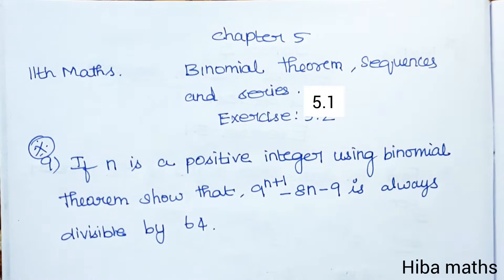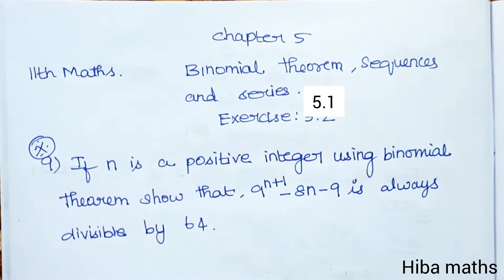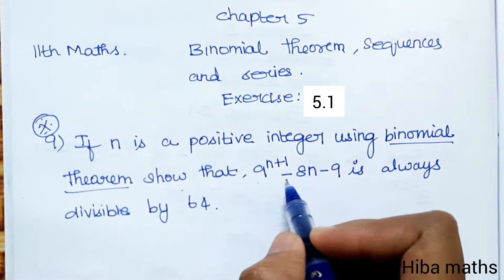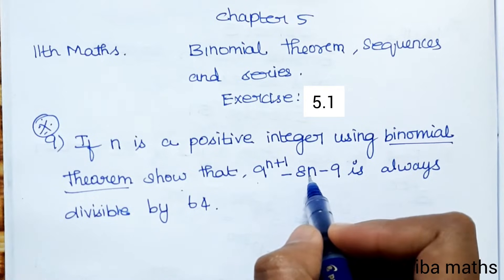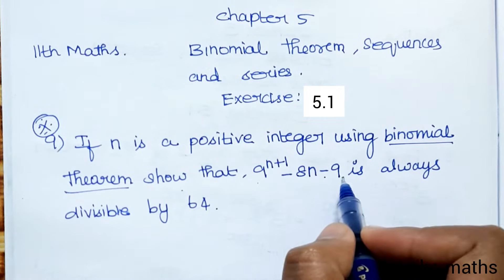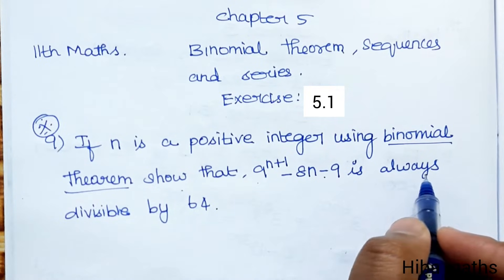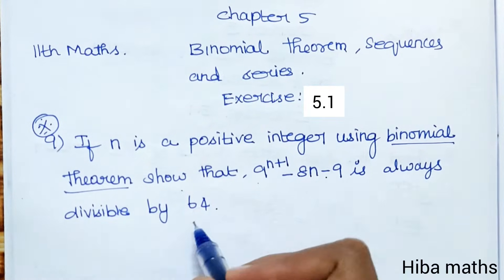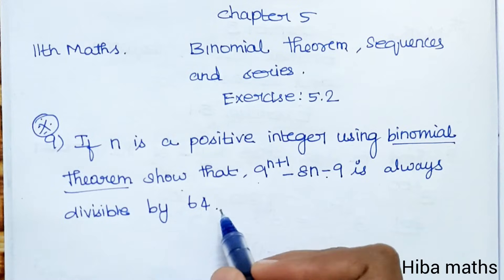Hello students, welcome to Hibamax 11th Standard Max, Chapter 5 Binomial Theorem Sequences and Series. Exercise 5.1: prove that 9 power n plus 1 minus 18n minus 9 is always divisible by 64.